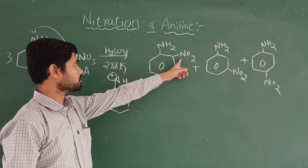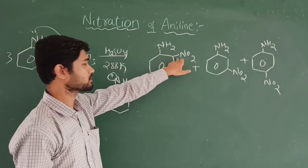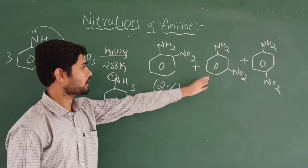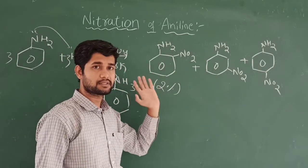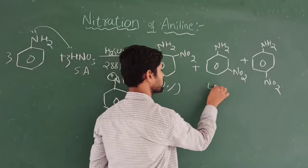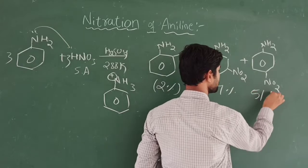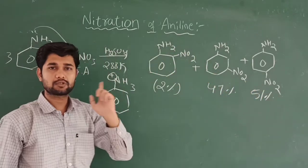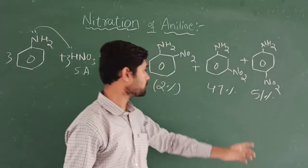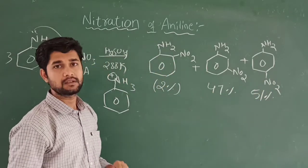At the ortho position, we obtain very little product — only about 2% — because of the withdrawing effect. Due to the electron deficiency of the nitrogen in the anilineum ion, meta position is formed at about 47%. The remaining product is at para positions: approximately 51%, as the withdrawing effect is least at para.